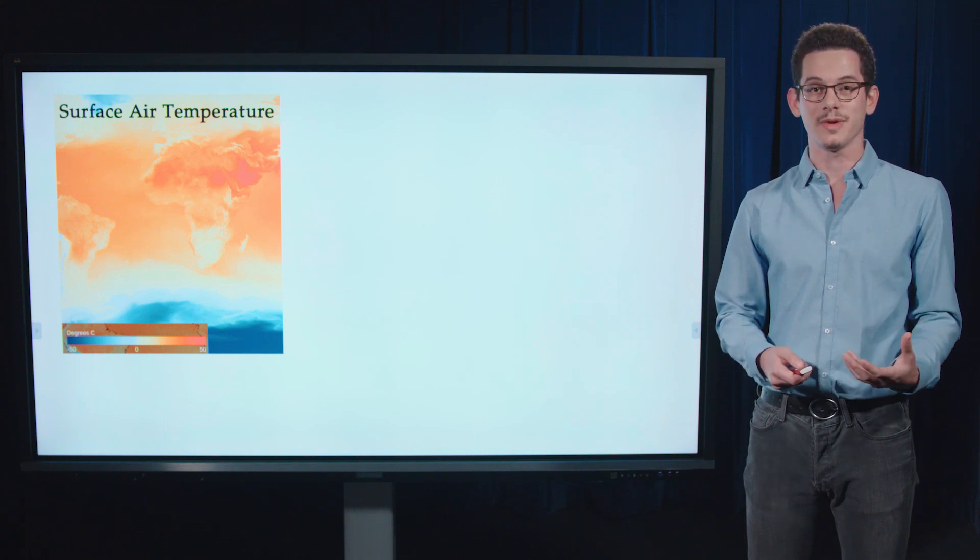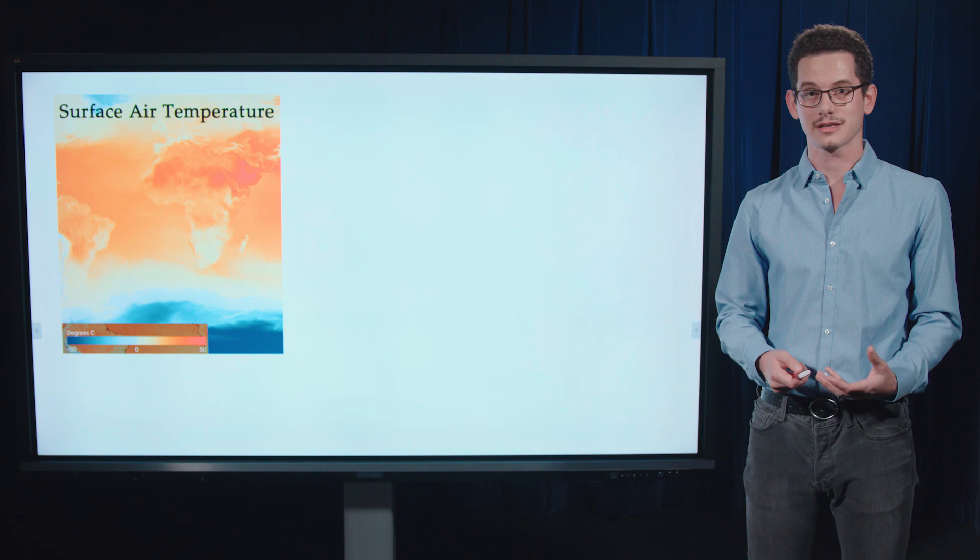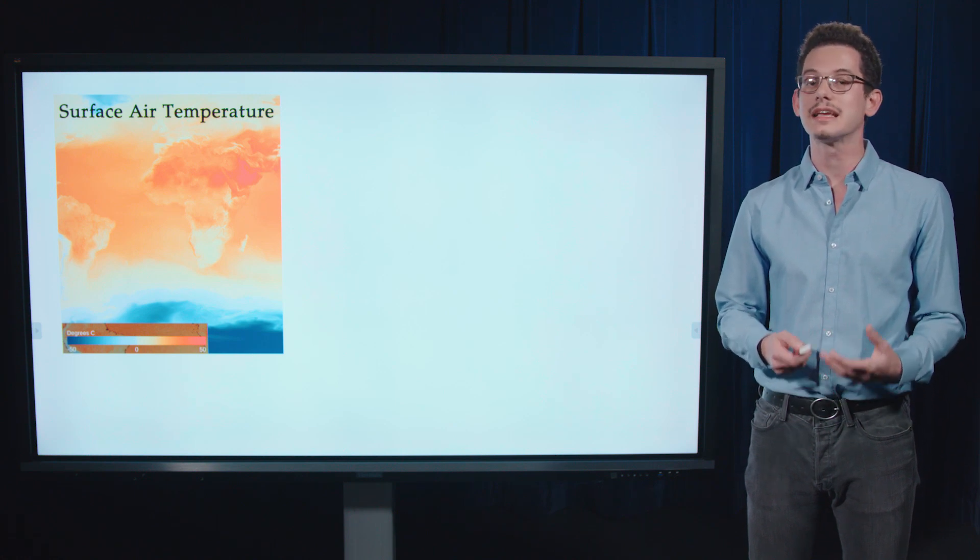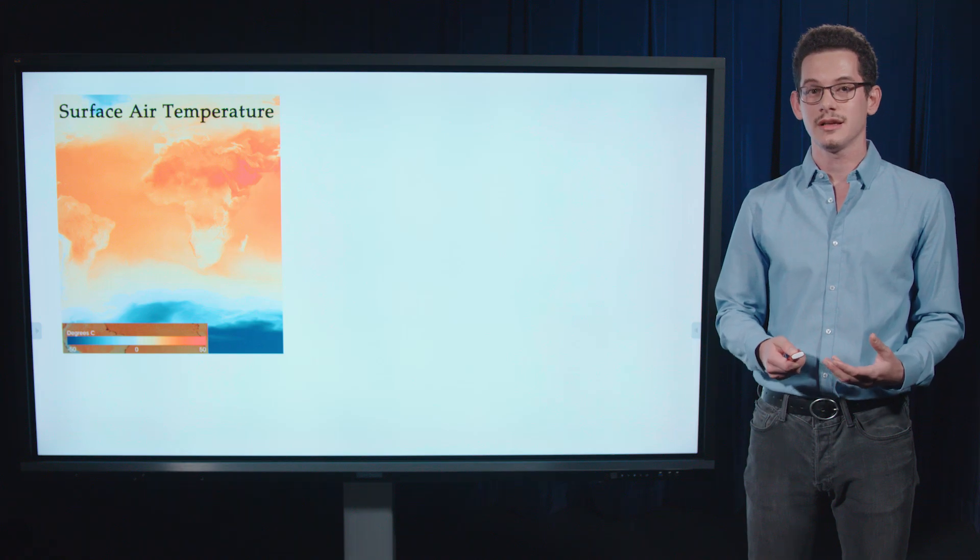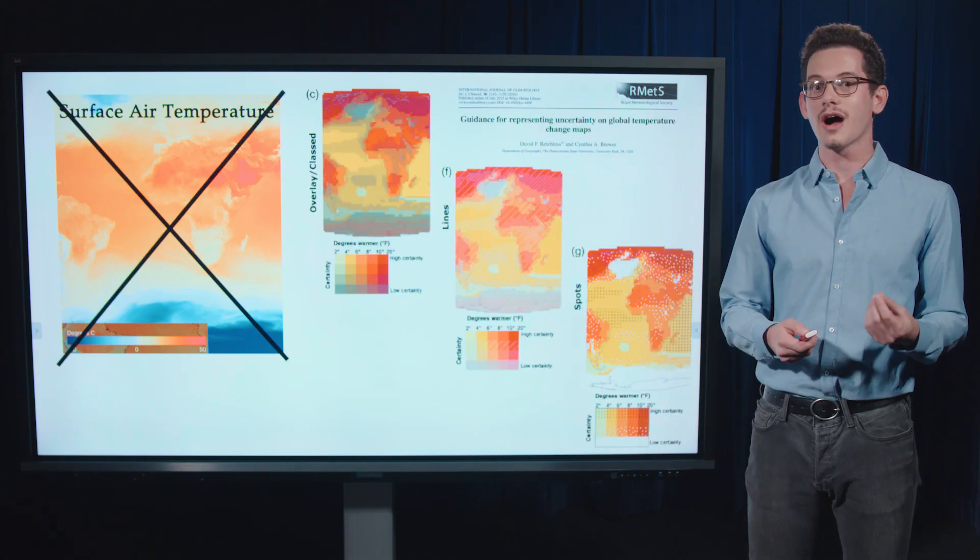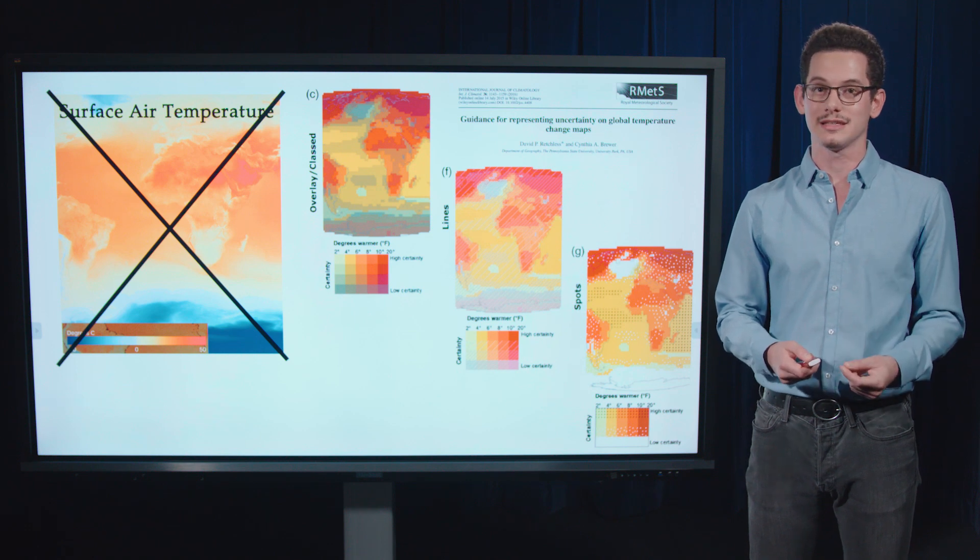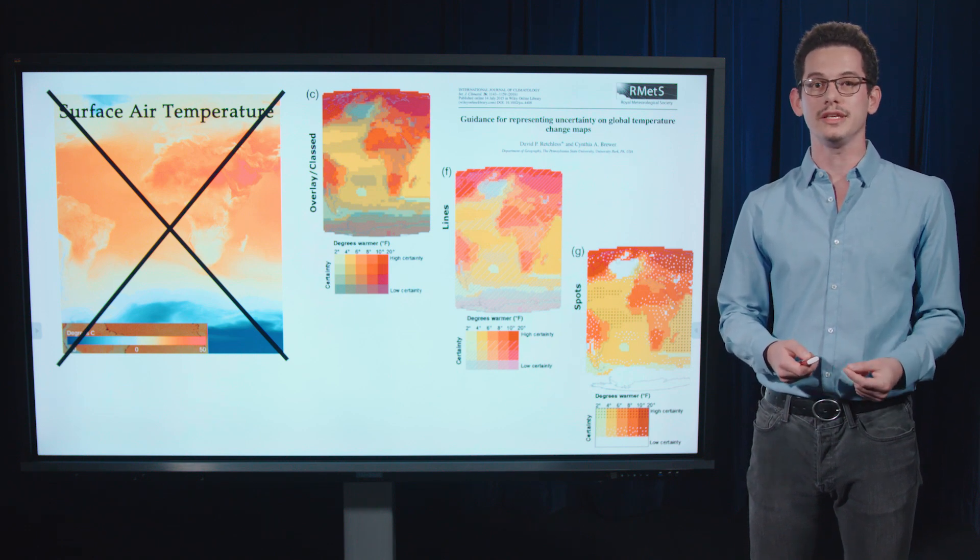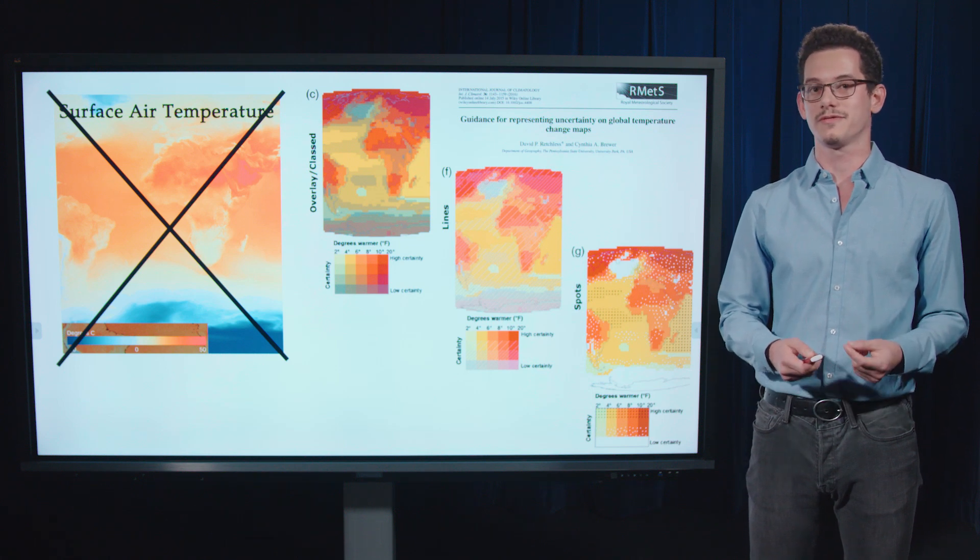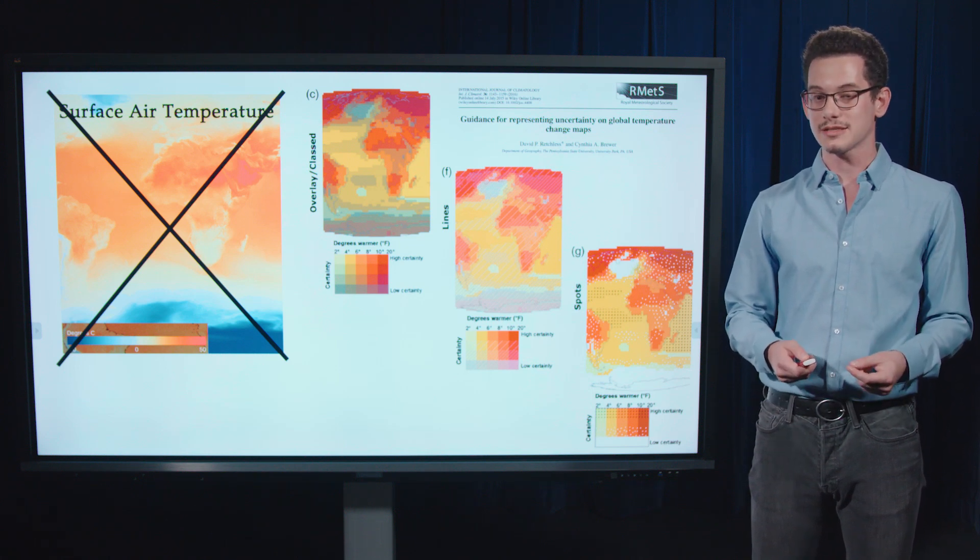So if NOAA's mission is really to guide users' decision-making with their forecast products, then they need to show their forecast together with their uncertainty. And there's many, many ways of doing this. So I urge NOAA scientists to use UVs that have been empirically validated and that are appropriate for their specific use case.